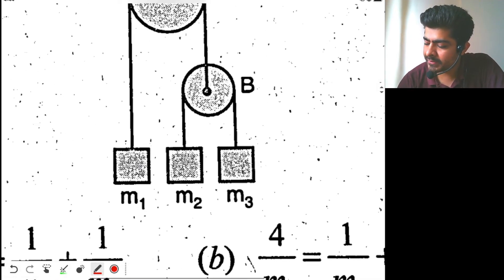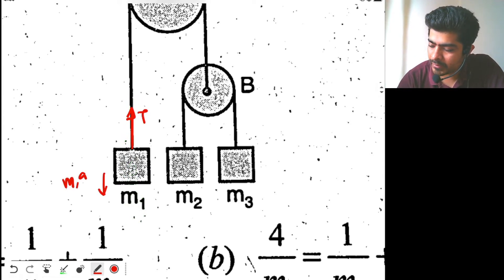See, look at this block m1. So m1g will be acting downwards, tension is acting upwards. This is your tension T upwards and we have m1g downwards. Since this block is not moving, it is in equilibrium, so this tension should be equal to m1g.